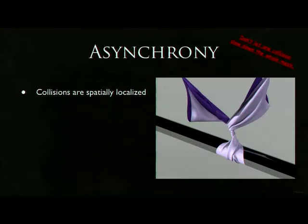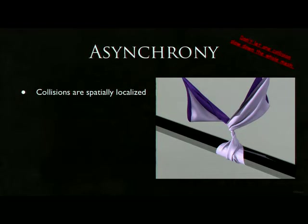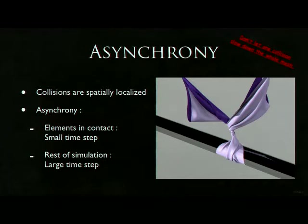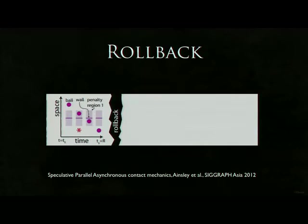The asynchrony is really important because where collisions happen we need to be very careful, but where there are no collisions we can be more relaxed. Where there's contact, we need small time steps; where there's no contact, we want to take large time steps, and those can be independent of each other. To make this work, we use a speculative execution framework with rollback. We time-step all elements at various rates depending on what's necessary in that spatial region, and run a whole window.